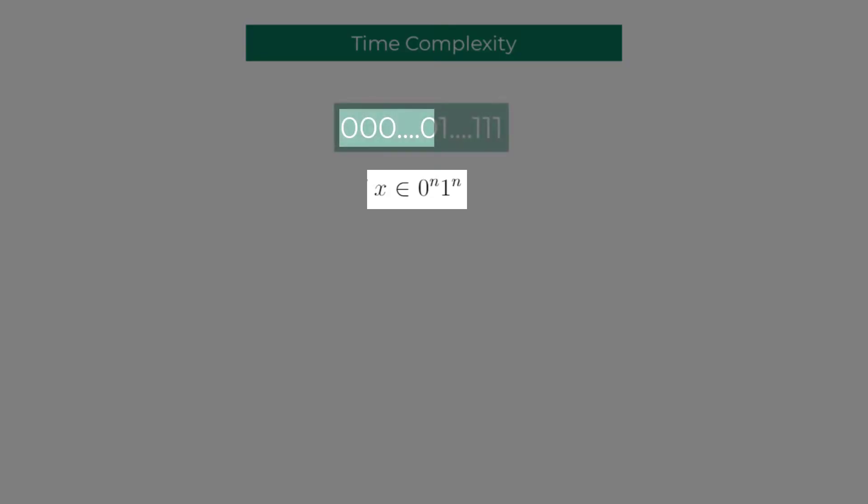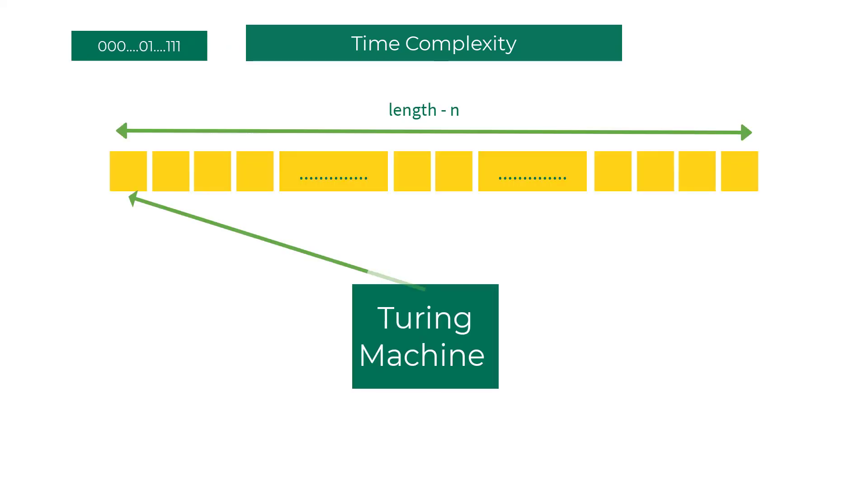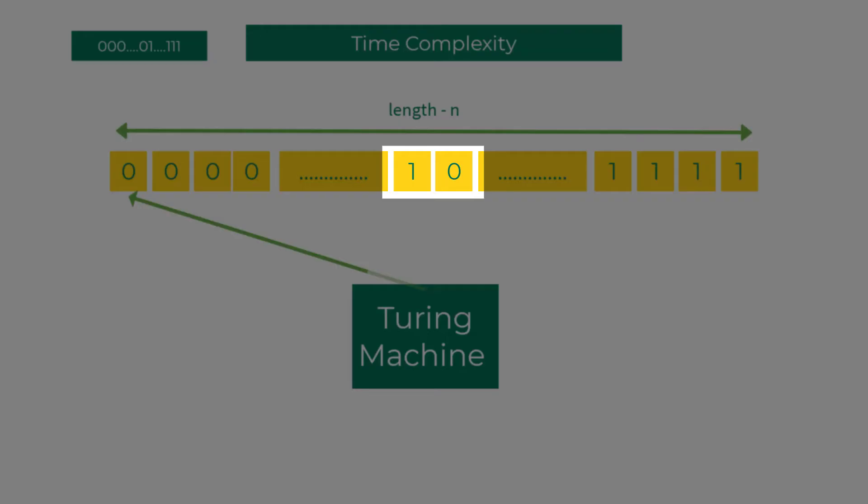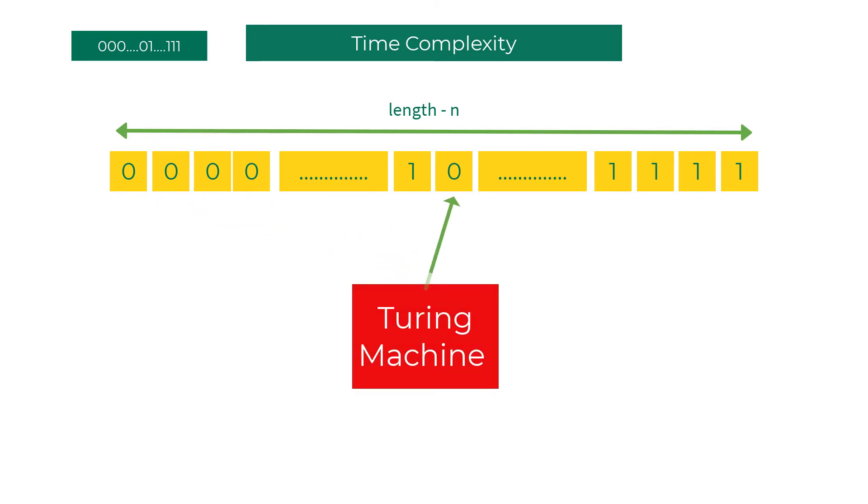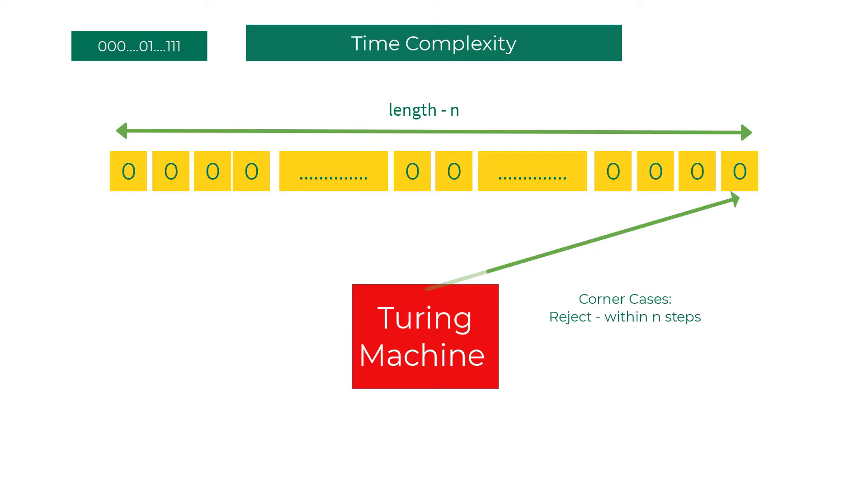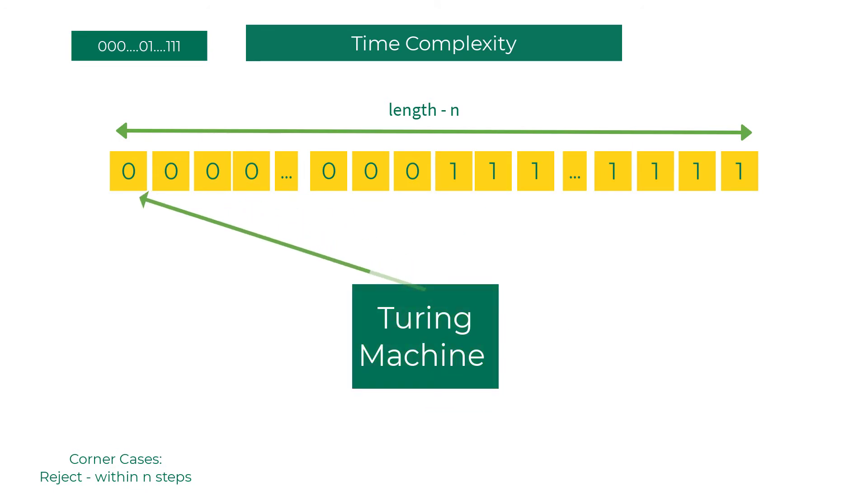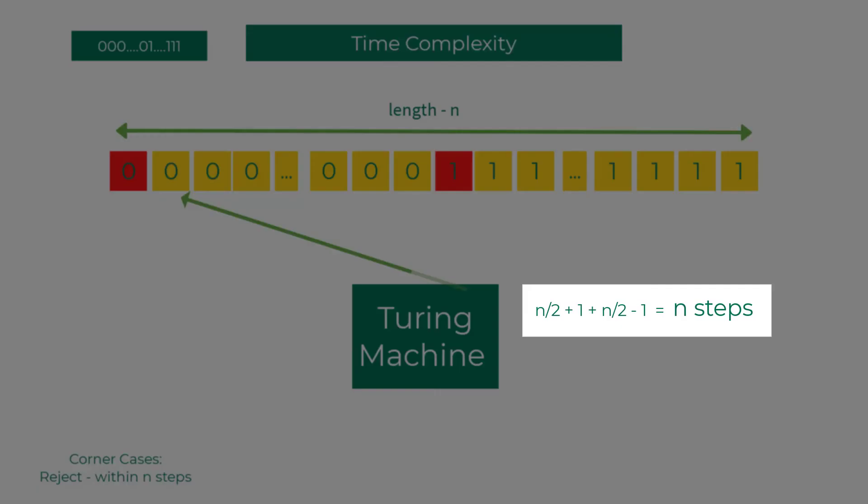Now let's see how to define time complexity using Turing machines. Let's look at a Turing machine that decides the language of the format where the number of zeros and ones should be the same. Let's look at the corner cases where we can confidently reject the input word. If we ever see a zero after one, then we can confidently reject it. If we see a one at the beginning of the tape, we can reject it. And if we go to the end of the tape and find only zeros, we can reject it. If you observe, all of these corner cases can be dealt with within n steps. Now let's look at the mechanism through which we accept a word in the given language. Going from zero to the one and coming back to that zero is going to take n steps.